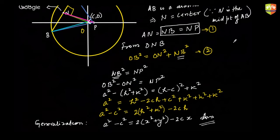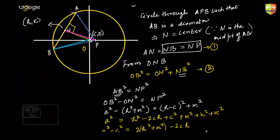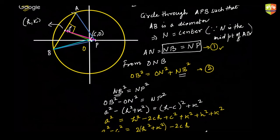To recap: since the chord subtends a right angle at P, we construct a circle with AB as diameter passing through P. N as midpoint of AB becomes the center, making NB = NP (condition one). Then applying Pythagoras to triangle ONB gives OB² = ON² + NB², and substituting NB² = NP² and expressing all distances in terms of h, k, c, and a gives us the desired locus. Any questions? Type 'CLR' if it's clear to you and I'll move on to the next concept.